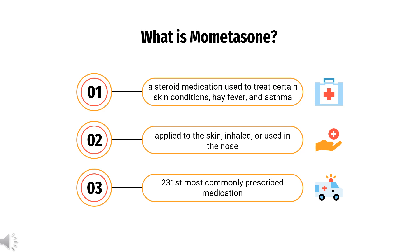Specifically, it is used to prevent rather than treat asthma attacks. It can be applied topically, inhaled, or used in the nose. Mometasone furoate was patented in 1981 and came into medical use in 1987. It is on the World Health Organization's list of essential medicines and is available as a generic medication.